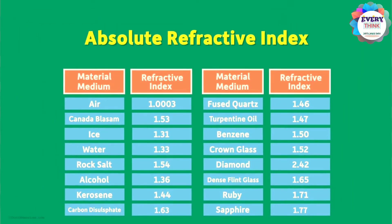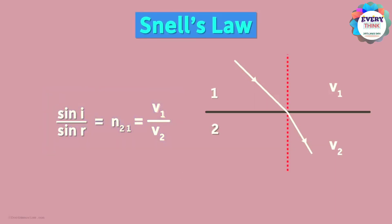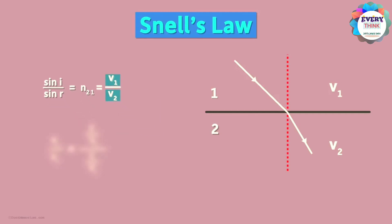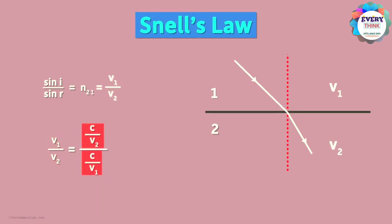The absolute refractive index is the refractive index of a medium with respect to vacuum. Using basic math, we can write the ratio V1/V2 in terms of c, the speed of light in vacuum. Simplifying this ratio, the numerator becomes the absolute refractive index of medium 1 and the denominator becomes the absolute refractive index of medium 2. Therefore, we can also say that sin i / sin r = N2 / N1, where N2 and N1 are the absolute refractive indices of media 2 and 1 respectively.